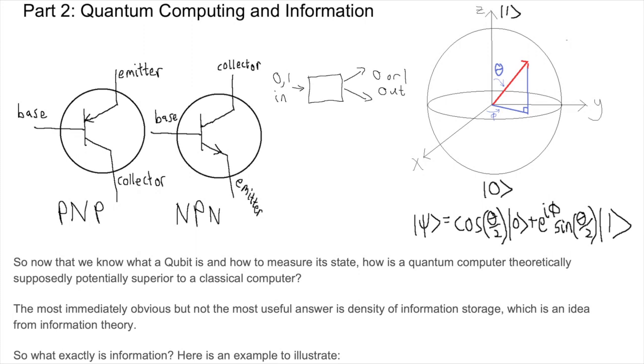So now that we know what a qubit is and how to measure its state, how is a quantum computer theoretically supposedly potentially superior to a classical computer?